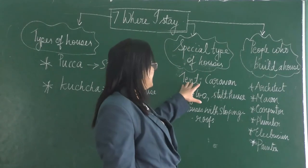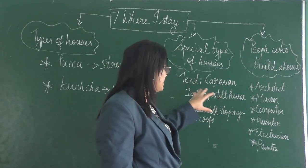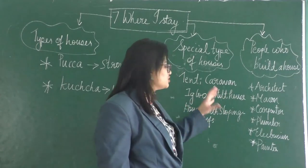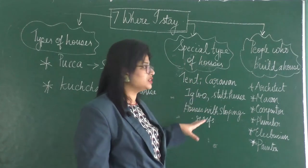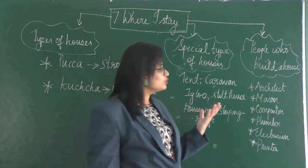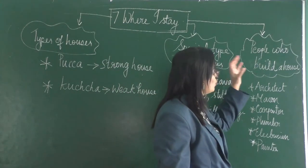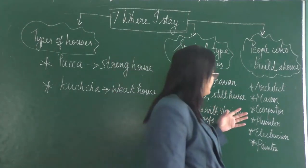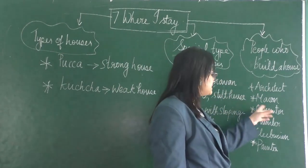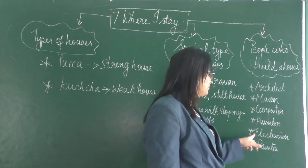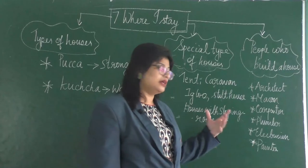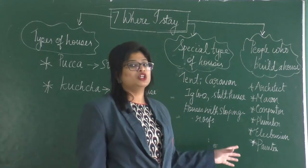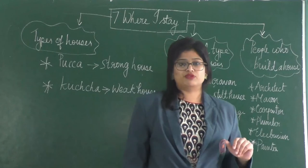Next we are going to study about special types of houses. There are different special types of houses: caravan, igloo, stilt house, and houses with sloping roofs. At last, we are going to study about people who built a house — an architect, mason, carpenter, plumber, electrician, and also painter. These are the main people.